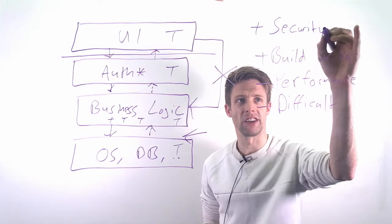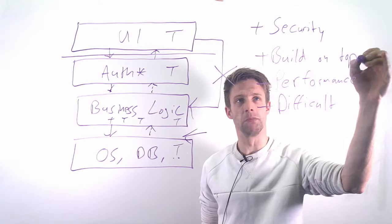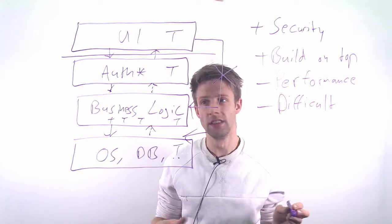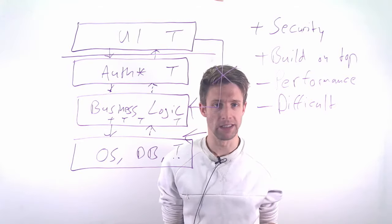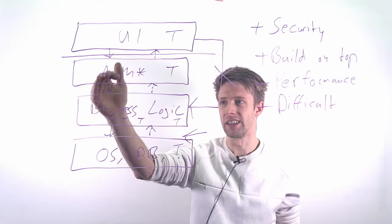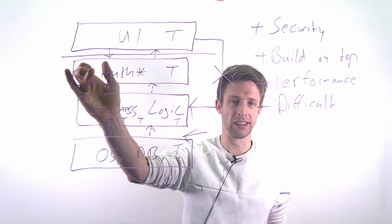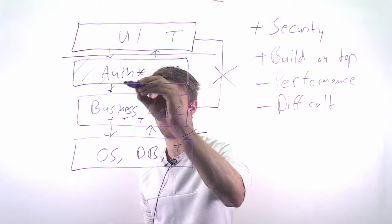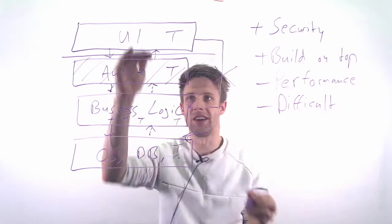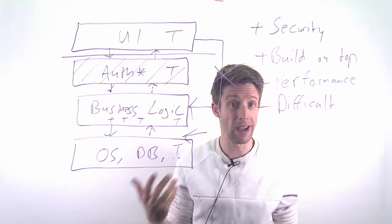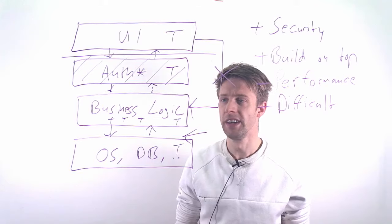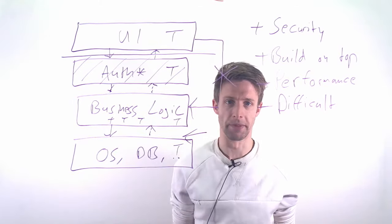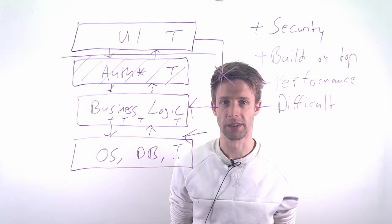One thing to add: it's not only easy to build on top or add security layers in between — it's also easy, again in theory, to replace things. If you find that the authentication is outdated, it should be fairly straightforward to implement a new one and put it in without having to change the remaining system. You can simply take a layer out, put something else in, and it should work.